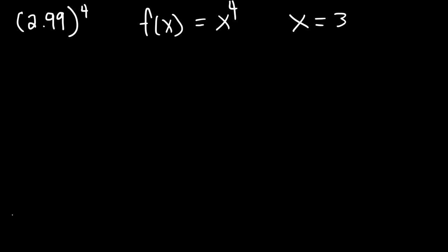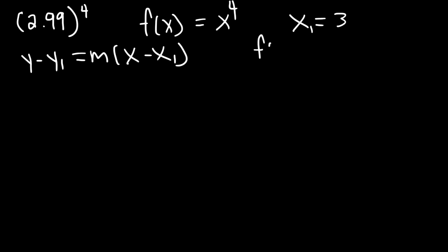We're going to use the point-slope formula: y minus y1 is equal to m times x minus x1. We already have x1 — x1 is 3. We need to calculate y1, which is going to be f of 3, which is 3 to the fourth, and so that's 81. So y1 is going to be 81.